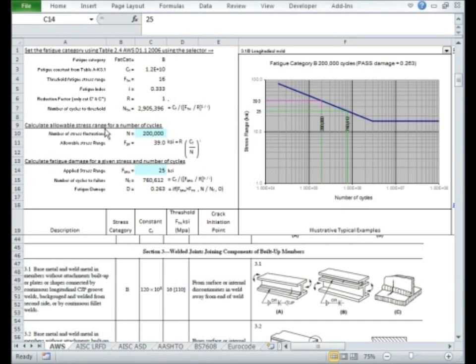The objective of our course is to make sure that all attendees can understand the AWS rules for fatigue design. We use spreadsheets to make calculations simple. This calculation shows that the detail under consideration is detail 3.1, which I select using this selector here. All the factors regarding stress category B are automatically filled in. We know we need the design to last 200,000 cycles and we have an applied stress range of 25 KSI.